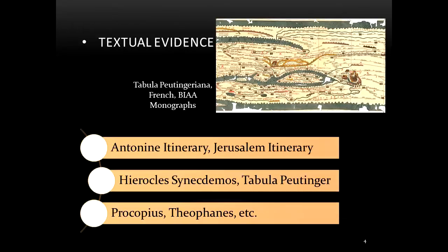The second evidence comes from written sources including the Antonine and Jerusalem Itineraries, cartographic and geographic sources such as the Tabula Peutingeriana and Hierocles' Synecdemus, and the accounts of Byzantine historians such as Theophanes the Confessor and Procopius, which provide information about the routes and their use.